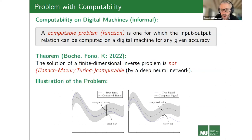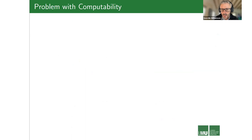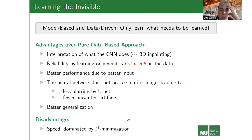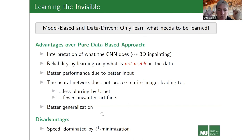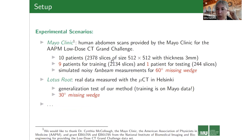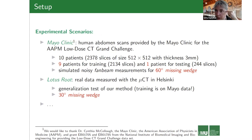Question about generalization in the shearlet-based inverse problem approach: generalization means training a neural network on given data and then exposing it to other types of data. Here, the network was trained on human CT images and then exposed to something very different — the lotus root data — and still performed quite well.